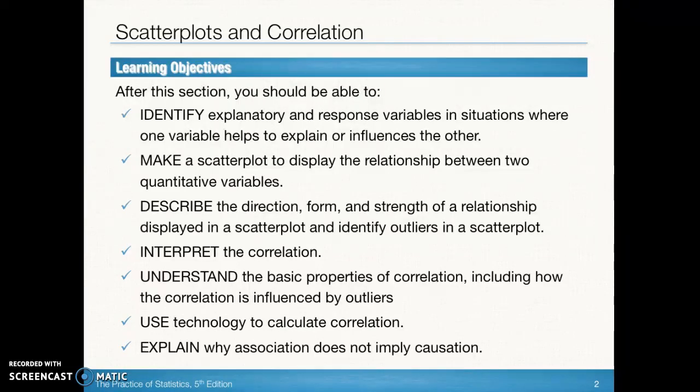We want to be able to draw scatter plots, both by hand and using the graphing calculator, to display the relationship between our two quantitative or numerical variables. We want to be able to describe the relationship that we see when we have a scatter plot. We're always going to describe using three items: direction, form, and strength.